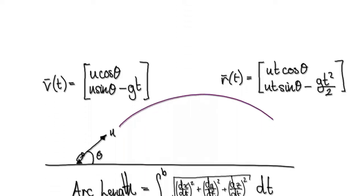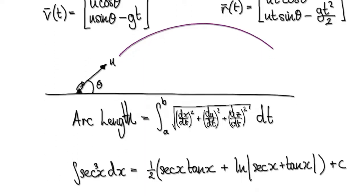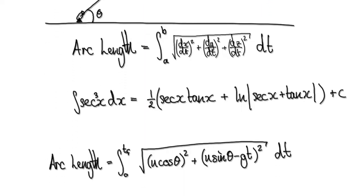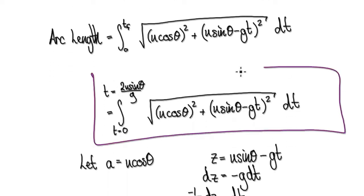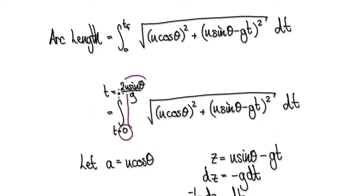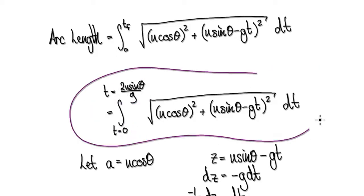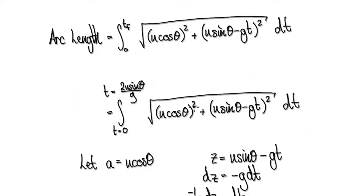Following on from the previous video, we got to this stage where the arc length is given by this expression. We need to integrate it from a time of zero to the time of flight, so it boils down to integrating this. We're going to use substitution, so let this thing here be A, so that later we can put A into here.